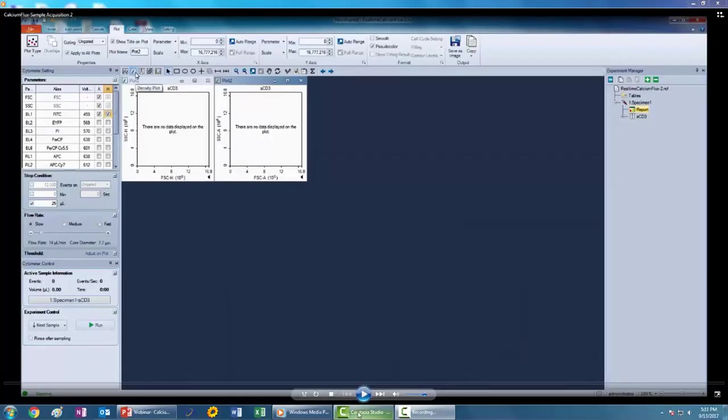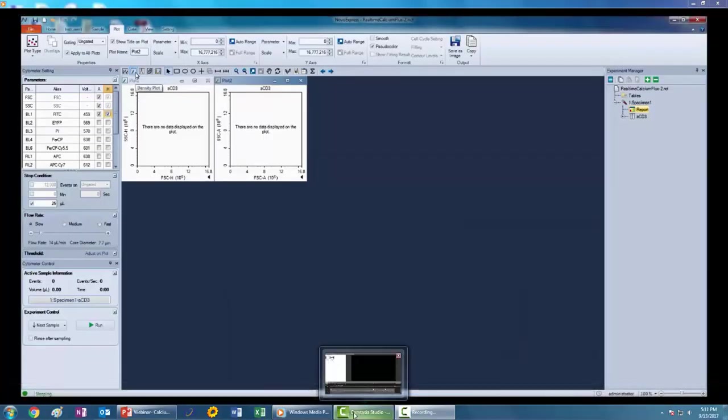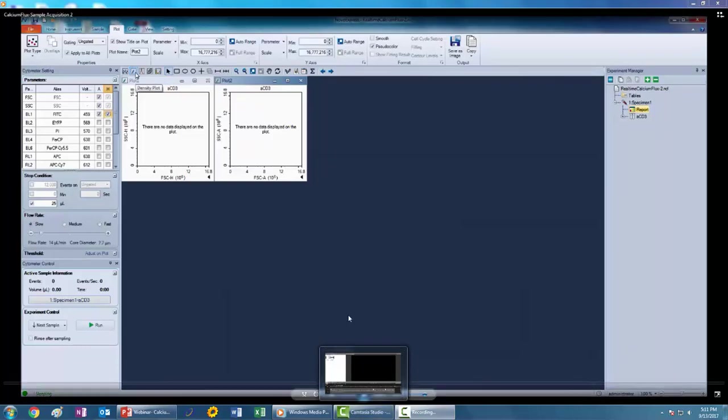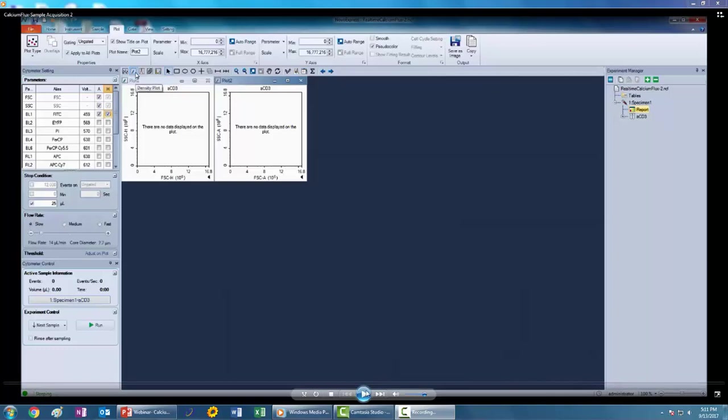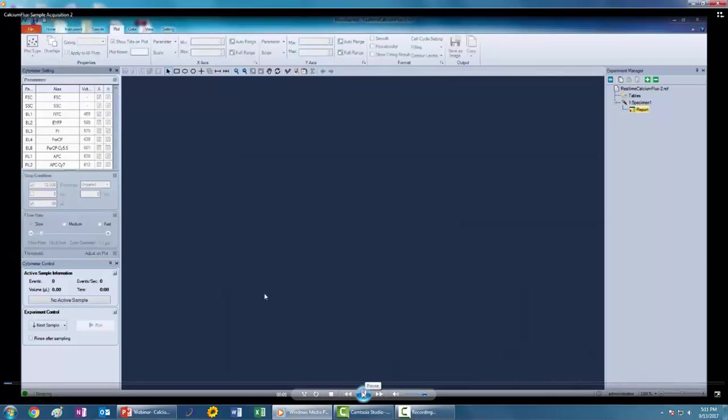I'm now going to demonstrate how the calcium flux experiment will be acquired on the NovaCyte. I think this is easiest to see in real time since specific settings are required for proper analysis, so you're going to be running this experiment with me. After creating the sample, the first thing you need to do is set the proper stop condition. The sample stop condition needs to not be based on event number but on a specific volume acquired. So for this experiment I have disabled the stop condition in the events and set it to 25 microliters.